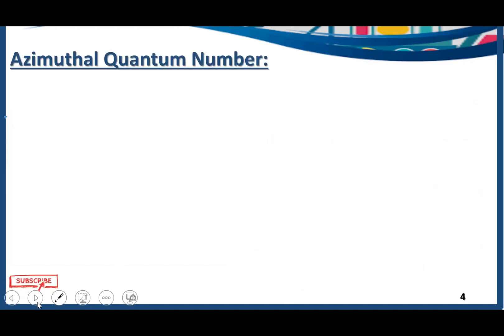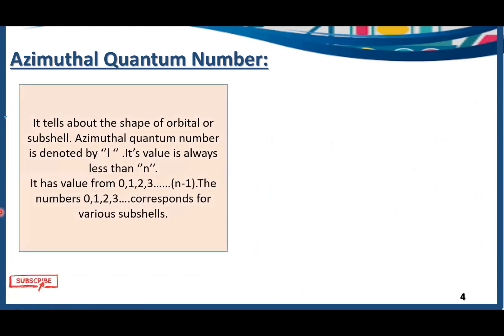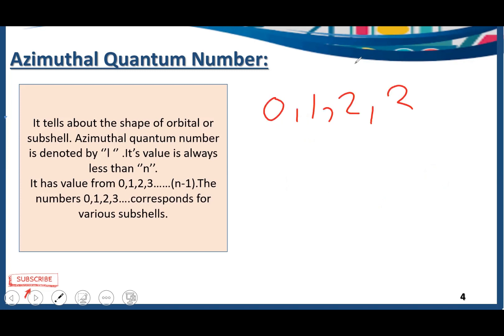The next quantum number is the azimuthal quantum number. Azimuthal quantum number is represented by small l, and it tells us about the shape of the orbital. Its value is always less than n, ranging from 0, 1, 2, 3 — that is, n minus 1. Here, n is the principal quantum number.